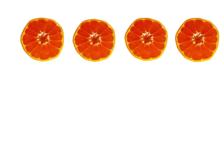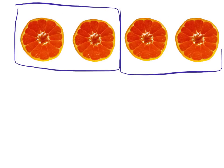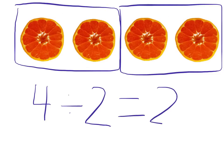Here's 1, 2, 3, 4 grapefruit. And we want to divide them into groups of 2. Here's a group of 2. Here's a group of 2. So 4 divided by 2 equals 2.